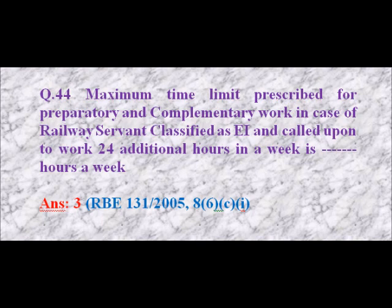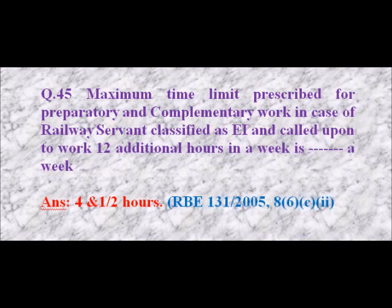Question 44: Maximum time limit prescribed for preparatory and complementary work in case of a railway servant classified as continuous is blank hours a week. For EI staff called upon to work 24 additional hours in a week, the limit is 3 hours a week. Question 45: For EI staff called upon to work 12 additional hours in a week, the limit is 4 and a half hours a week.